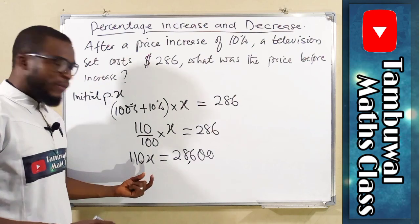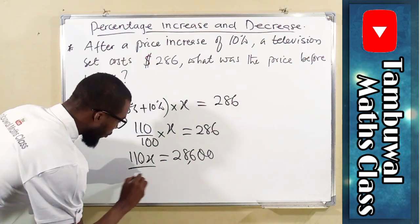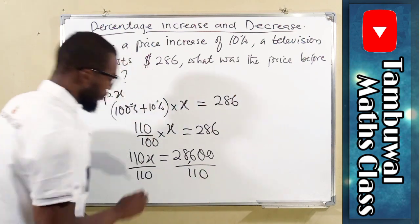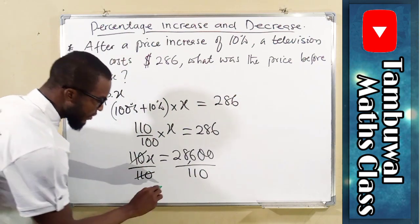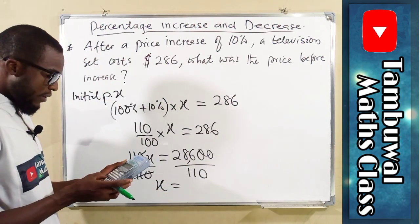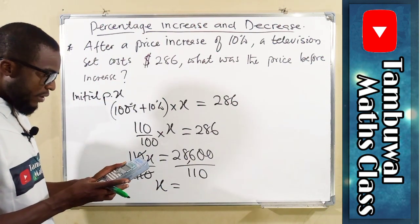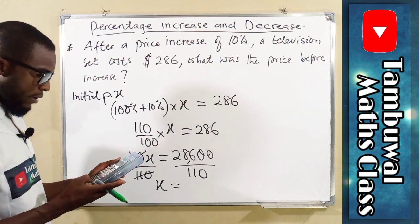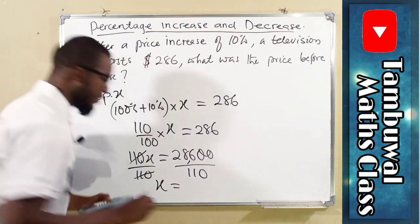To find the actual value of X, we divide both sides by 110. This will cancel this. And finally, X is equal to 28600 divided by 110, and we have $260.